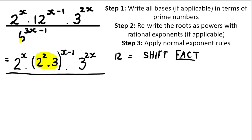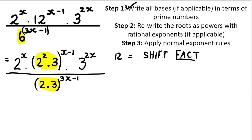This inside the bracket is 12, so all I'm doing is rewriting 12 as two to the power of two — which is four — multiplied by three. We have to make sure to raise it to that same original exponent. Then we multiply that by three to the power of two x; three is a prime number already. Then we do six: six is two multiplied by three. That is the same as writing six. Six was raised to this exponent, so two multiplied by three needs to be raised to the same exponent. So that's step one: write all bases as prime bases, if applicable.